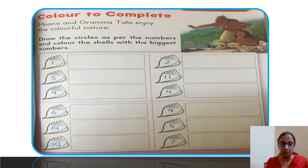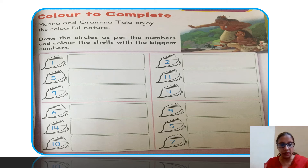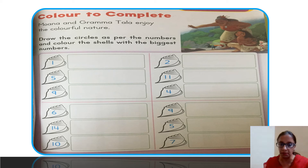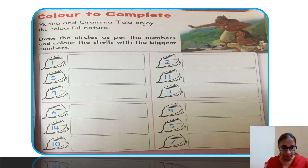Again: color to complete — Moana and grandma Tala enjoy the colorful nature. Draw the circles as per the numbers. Here also, draw circles as per the numbers. But now, color the shells with the biggest numbers — opposite of the last page. The shell with the biggest number is what we will color.